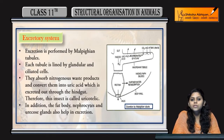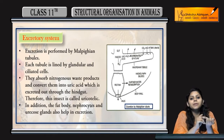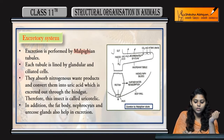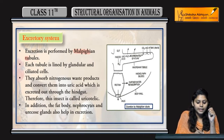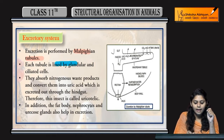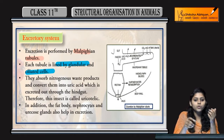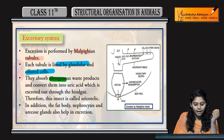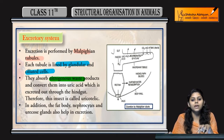Coming to the excretory system of cockroaches - kya hota hai cockroaches mein? Ham ne jab elementary kanal study kya, then ham ne study kya tha that excretion hoti hai through Malpighian tubules. Yhe joh Malpighian tubules hai, they are lined by glandular and ciliated cells. Yhe absorb kerti hai nitrogenous waste products - jitne bhi nitrogen containing waste products hai, woh Malpighian tubule kya kertah hai?